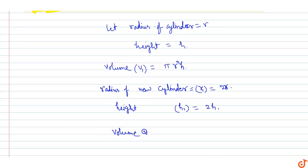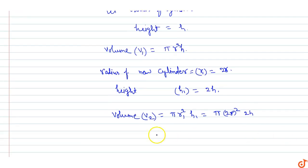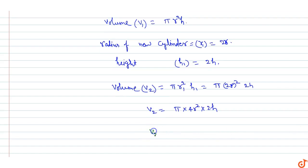So the volume V2 equals pi into r1 squared into h1. Since r1 is 2R, we get (2R) whole squared, and h1 is 2H. That gives pi into 4R squared into 2H, so V2 equals 8 pi R squared H.